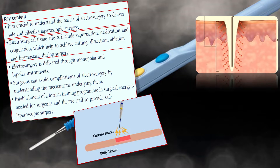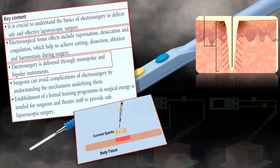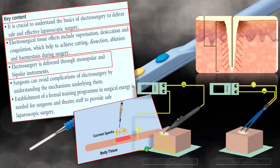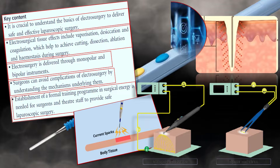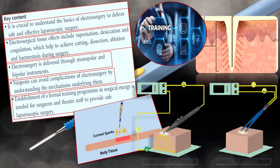The next point is about the different types of instruments. Electrosurgery is delivered through monopolar and bipolar instruments, and surgeons can avoid complications by understanding the mechanisms underlying them. The last point is about the need for formal training — establishment of a formal training program in surgical energy is needed for surgeons and theater staff to provide safe laparoscopic surgery.